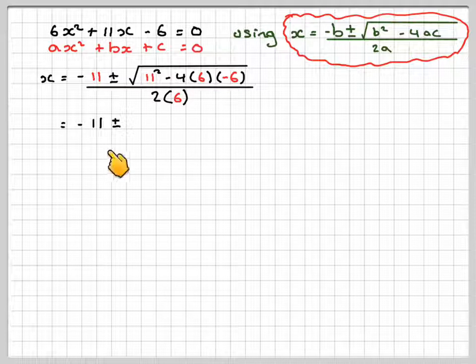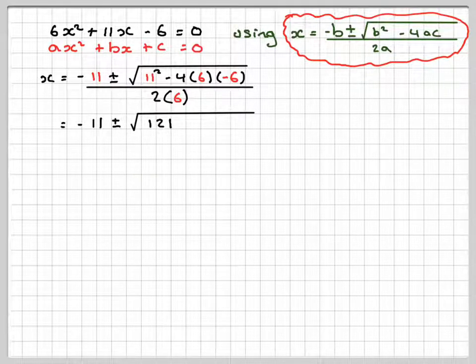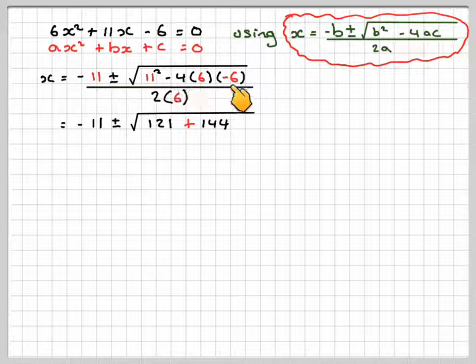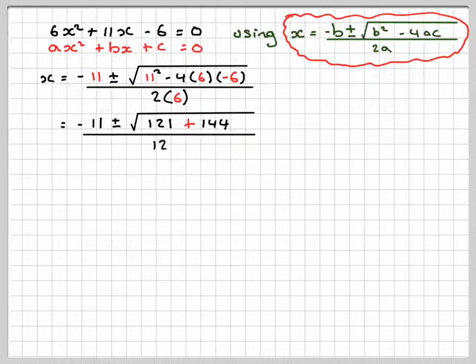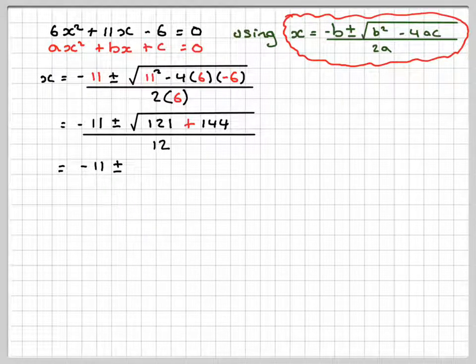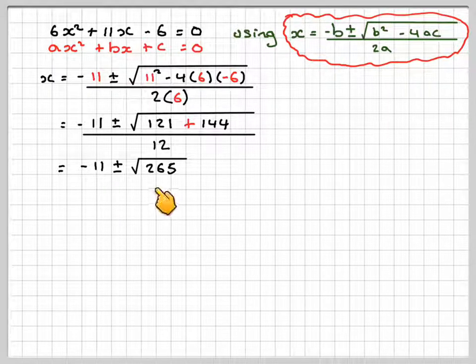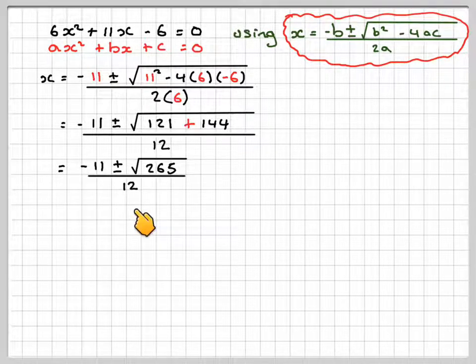So it's going to give minus 11 plus or minus the square root of 121, 11 squared. This will be plus because you've got a minus times a minus. 4 times 6 times 6 is 144. Minus minus makes it plus. All divided by 12. So we're going to get minus 11 plus or minus the square root of 121 plus 144, which is 265, divided by 12.